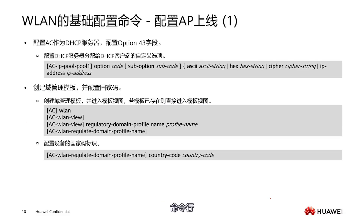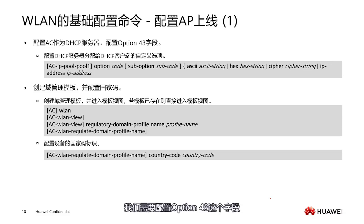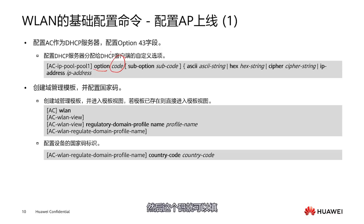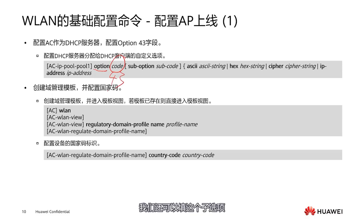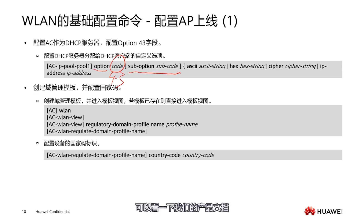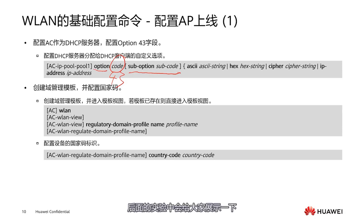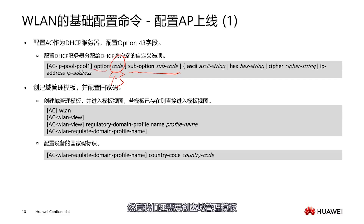Let's look at the command line. If our AC serves as the DHCP server, we need to configure the option 43 field. Here you use the keyword 'option' and then fill in 43. If needed, we can also fill in a sub-option. You can refer to our product documentation for detailed instructions. In the later experiments, we will show how the option 43 field is used.